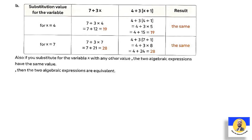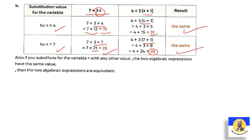Next pair: 7+3x and 3(x+1)+4. Substitute x=4: 3×4+7=12+7=19, and (4+1)×3+4=5×3+4=15+4=19 — the same! Check x=7: 3×7+7=21+7=28, and (7+1)×3+4=8×3+4=24+4=28 — also the same! Since both values gave the same result, the two algebraic expressions are equivalent.